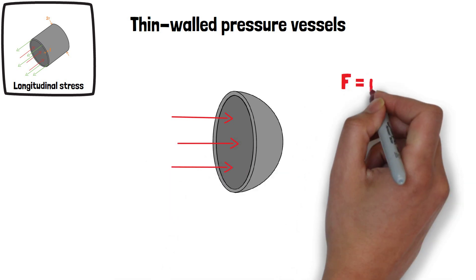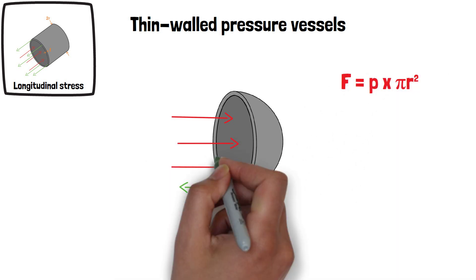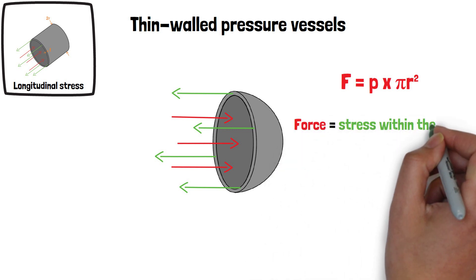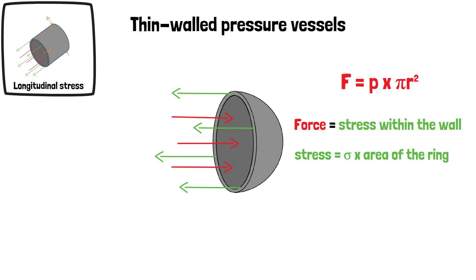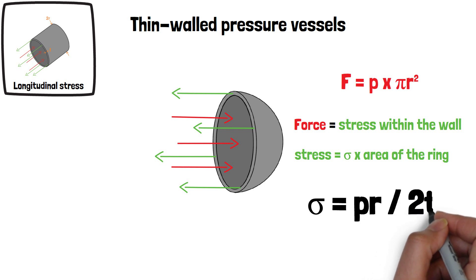Again, the force is equal to P times pi R squared, which again is equal to the stress within the wall, calculated by stress times area of the ring. So the value for stress is also calculated by sigma equals PR over 2T.